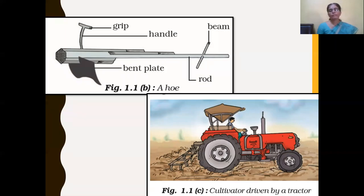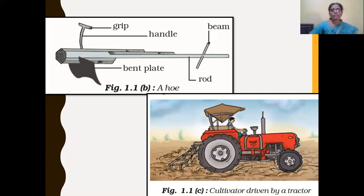One more agricultural implement used for plowing is the cultivator. It is a modern agricultural implement driven by a tractor, which saves labour and time. So the three agricultural implements for plowing are: plow, hoe, and cultivator — where the cultivator is the modern implement driven by a tractor.